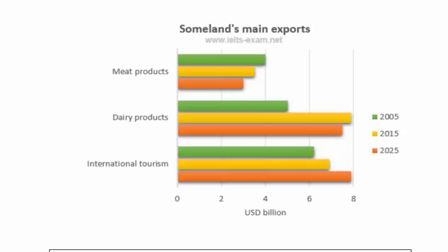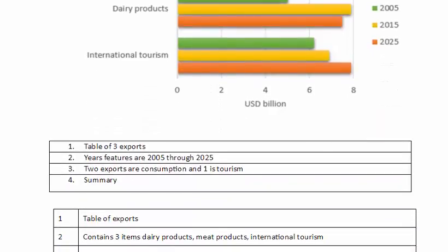It starts at zero going up to eight billion dollars. With that information, I would go through the effort of creating an outline. Line item one: I want to talk about the table of three exports. Line item two: I want to talk about the years featured, which are 2005 through 2025. Line item three: I want to talk about two exports for consumption and one for tourism. And then I'll write my summary.